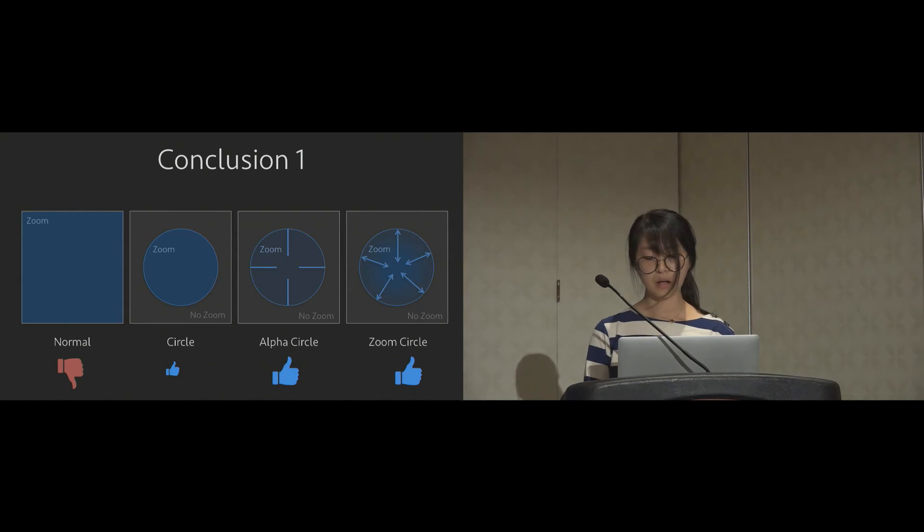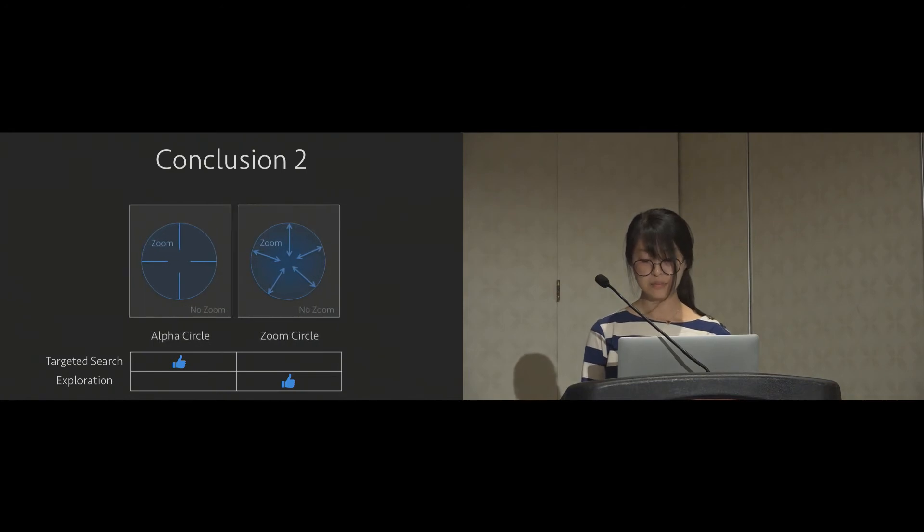Based on both the quantitative and qualitative result, we come to the conclusion that normal mode is not suitable for panning zoomed in imagery, while circle mode is slightly better. Alpha circle mode and zoom circle mode are assessed significantly better than the other two. People like these modes in different scenarios for different reasons. Some people prefer alpha circle mode when they know where to explore next. But when the user is not familiar with the panorama scene, one may prefer zoom circle mode to gradually find interesting object or area to explore.